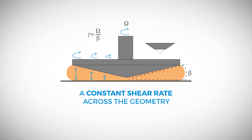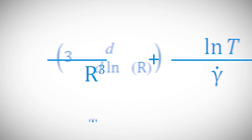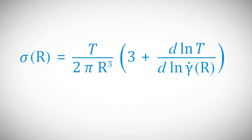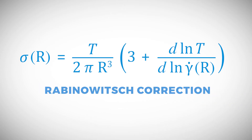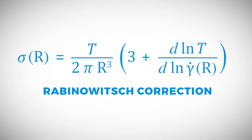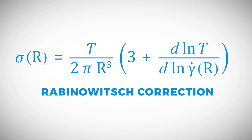Additionally, cones accurately measure the shear viscosity as a function of shear rate. Due to the change in the shear rate in the radial direction for parallel plates, the viscosity of non-Newtonian fluids may be corrected using the Rabinowitz correction.